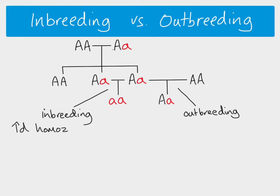Inbreeding increases homozygosity. That's because it's much more likely that you're going to have similar genotypes, and therefore you're going to end up with homozygous offspring. It doesn't have to be homozygous recessive — it could also be homozygous dominant. But especially if you keep going for many generations of inbreeding, the number of genes which end up homozygous increases.